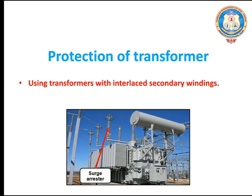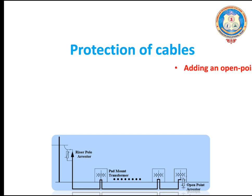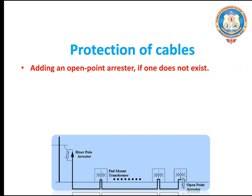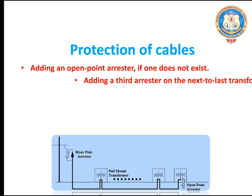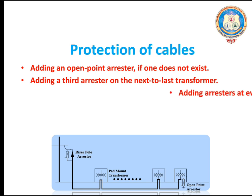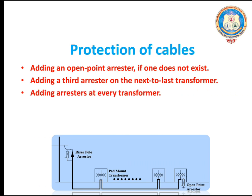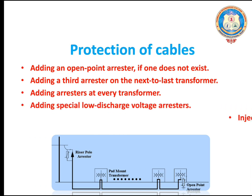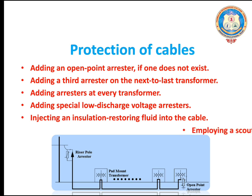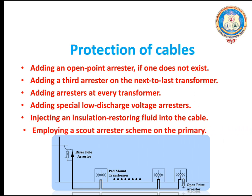How are transformers protected? Transformers are protected by using interlaced secondary windings and having surge arrestors at the X-terminal. How are cables protected? By adding an open-point arrestor, by adding a third arrestor on the next-to-last transformer, by adding an arrestor at every transformer, by adding special load discharge voltage arrestors, by injecting an insulation-restoring fluid into the cable, and by employing a scout arrestor scheme on the primary.